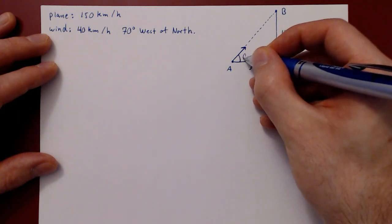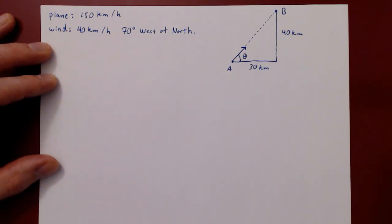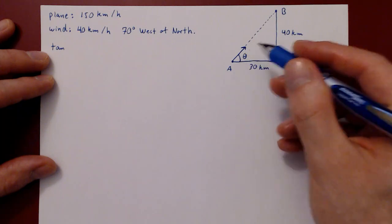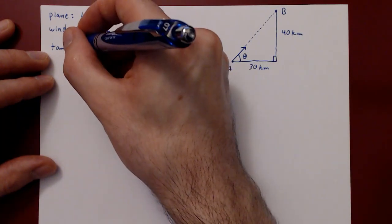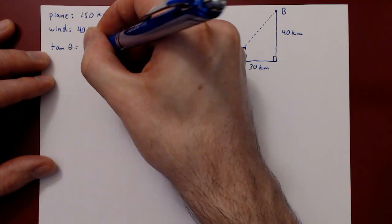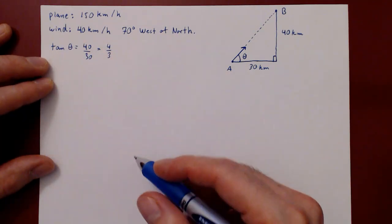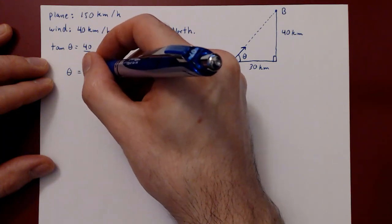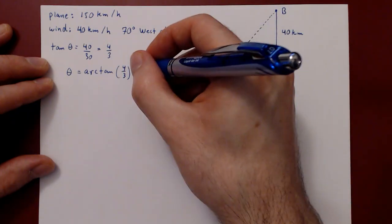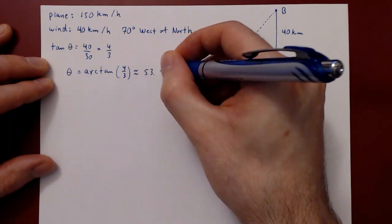The first thing we need is the direction of the objective vector from city A to city B. Let's call this angle theta. Using basic trigonometry on the right triangle, tan(θ) = opposite over adjacent = 40 over 30 = four-thirds. Solving for theta: θ = arctan(4/3) ≈ 53.13 degrees.